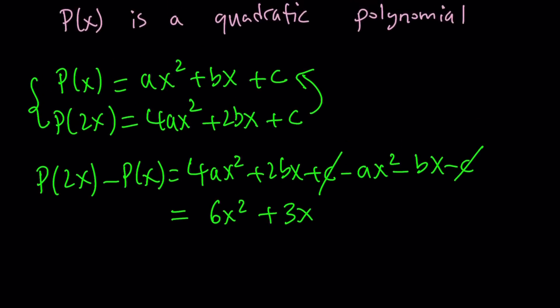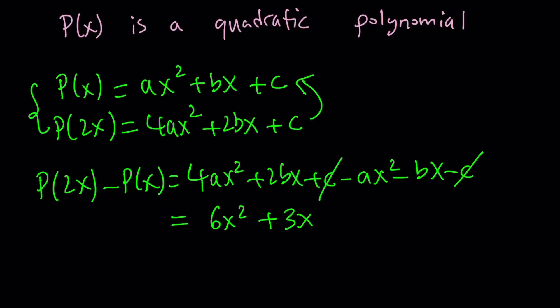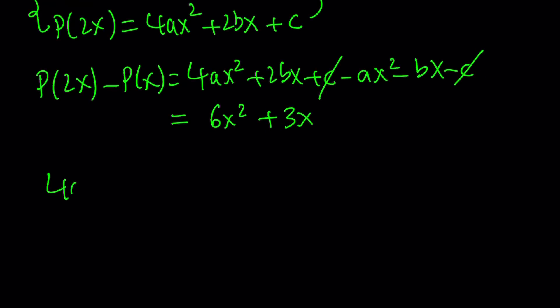6x squared plus 3x because it's given in the problem. So we started off with the assumption that P of x must be quadratic. We plugged it in, and now we got the following. But here's what I want you to notice. 4ax squared minus A x squared, that's going to give me 3ax squared plus 2bx minus Bx. That's going to give me a positive Bx. Since the C canceled out, we don't have that anymore, which is good because I don't have a constant on the right-hand side.